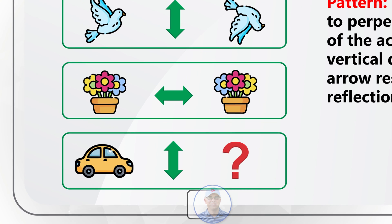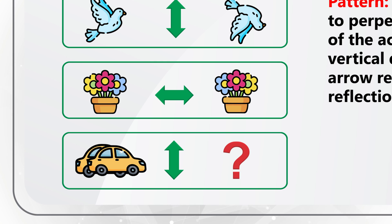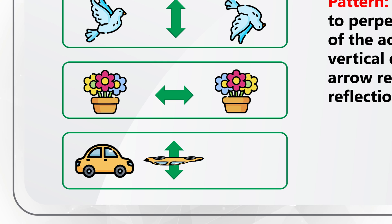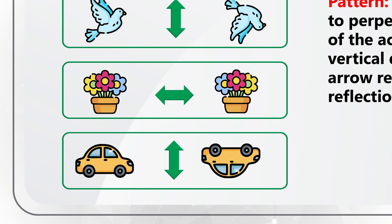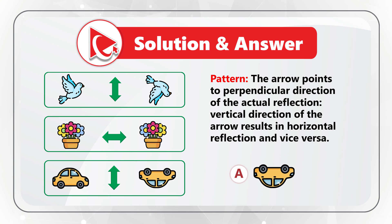Looking at the third row to get to the correct answer: because the arrow goes from top to bottom, we need to use horizontal reflection, which means that the correct answer here is choice A. Did you get to the same answer? If not, please make sure to post your answer and rationale in comments.